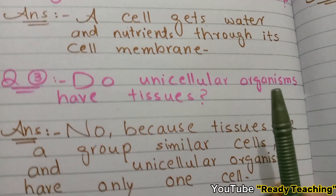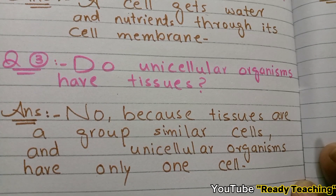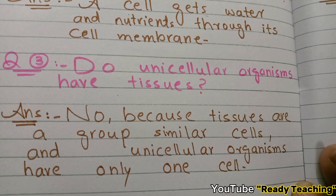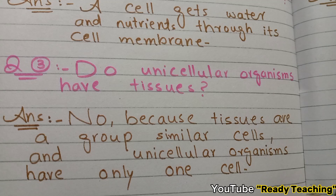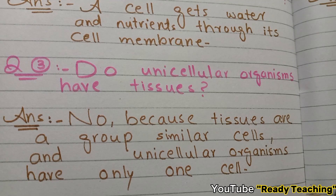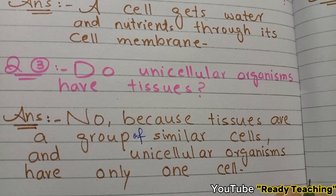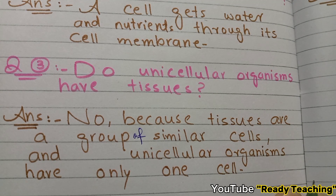Third short question: Do unicellular organisms have tissues? No — a unicellular organism is made of only one cell. Tissues require a group of similar cells. Since there is only one cell in a unicellular organism, there are no tissues. Because tissues are a group of similar cells, and unicellular organisms have only one cell.